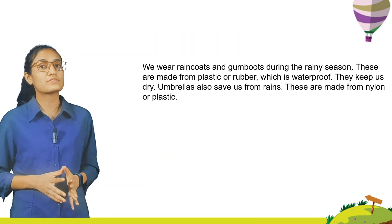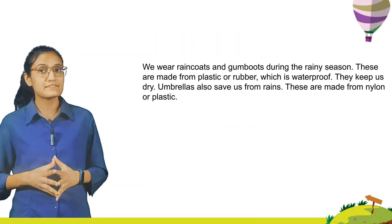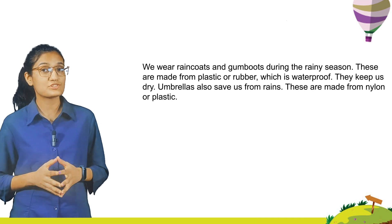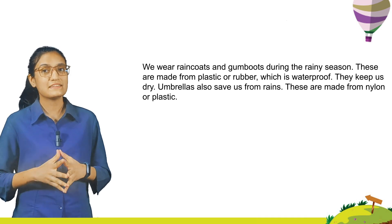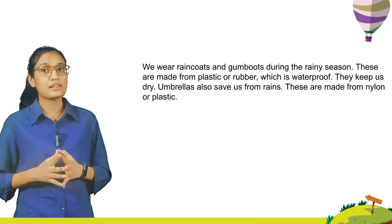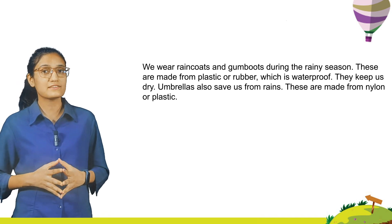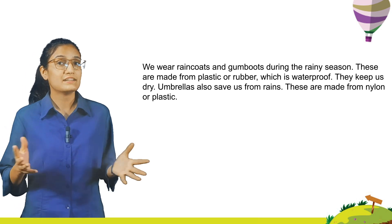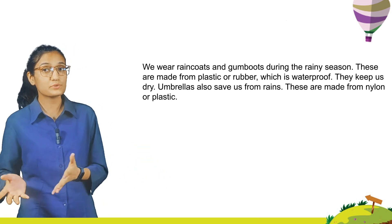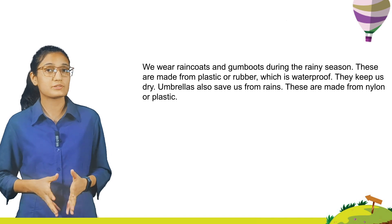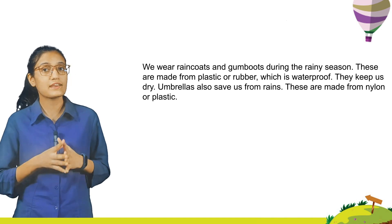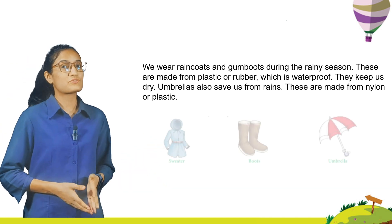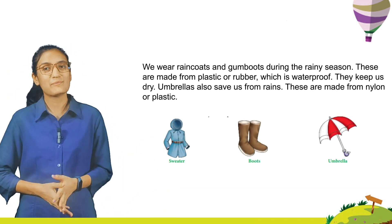We wear rain coats and gum boots during the rainy season. They are made from plastic or rubber, which is waterproof, and they keep us dry. Umbrellas also save us from rain and are made from nylon or plastic. Rain coats, gum boots aur umbrellas humein baarish se bachate hai — ye nylon or plastic se bane hote hai. Here you can see the pictures of the sweater, boots and umbrella.